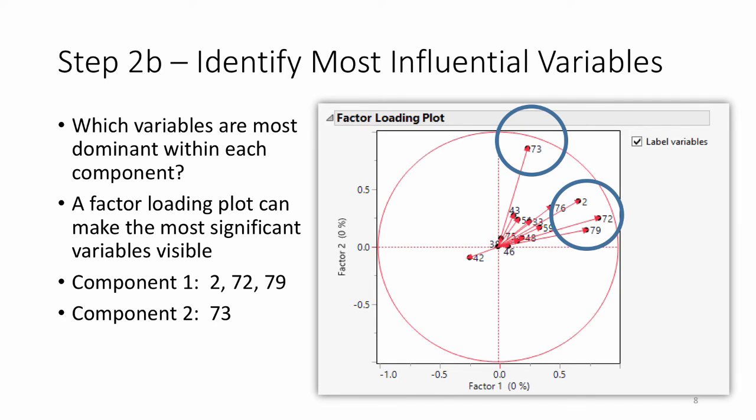The next step is to look at which variables within those components are most significant. You can see on the right here in the factor loading plot that components 2, 72, and 79 were significant and grouped together and that component 2 was comprised of the variable 73.